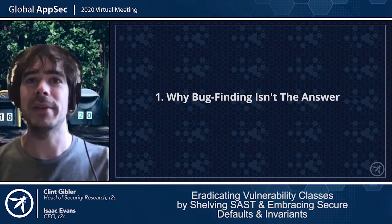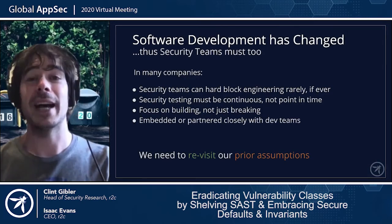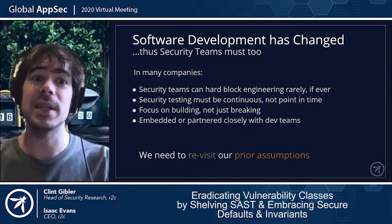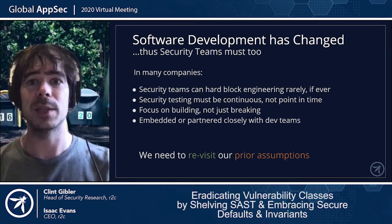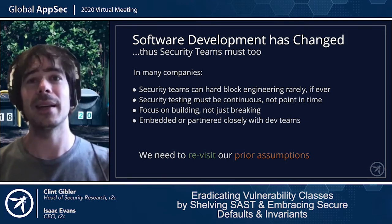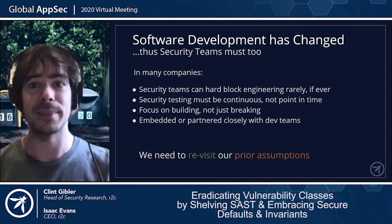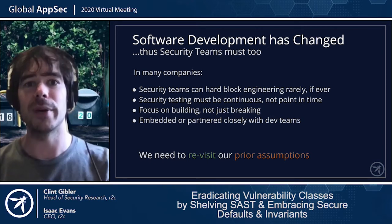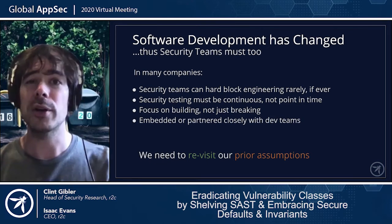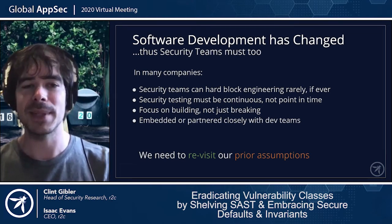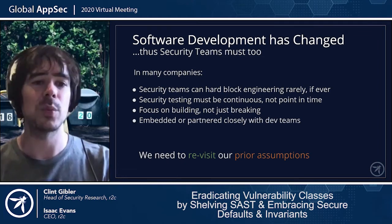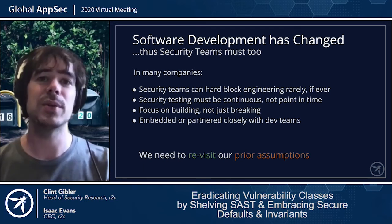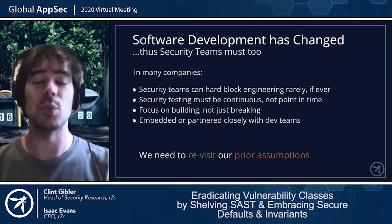Why bug finding isn't the answer. In the past five, ten, and fifteen years, software development has changed a lot, and security teams need to change as well. Security teams often can't hard block engineering. Security can no longer be point-in-time — it must be continuous. Many security teams are focused on security engineering rather than just breaking and finding bugs. Often now they are embedded or closely partnered with development teams. It's important to revisit our prior assumptions about how to be most effective given how different the world is.